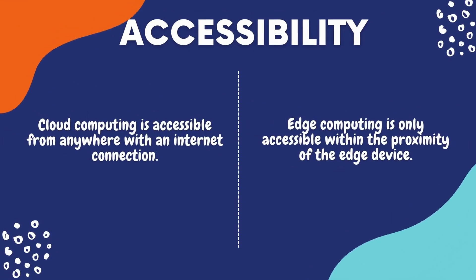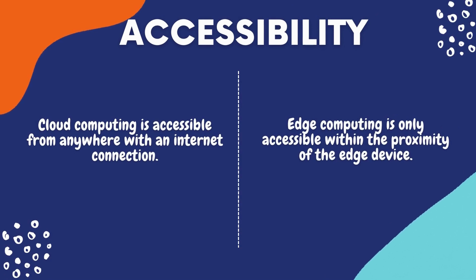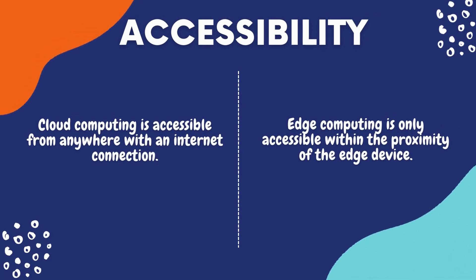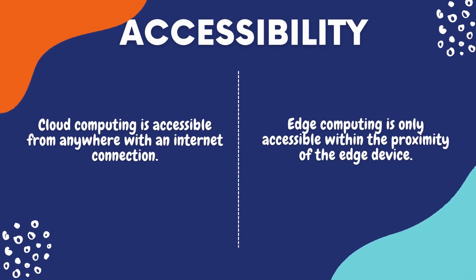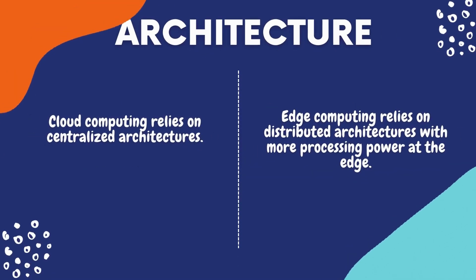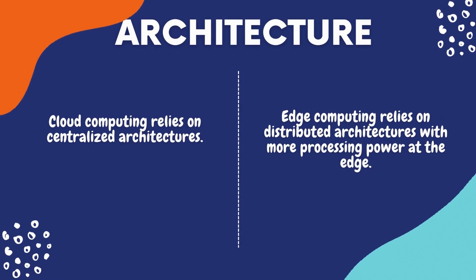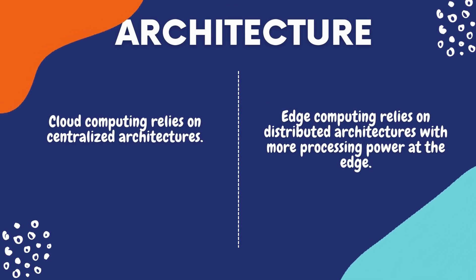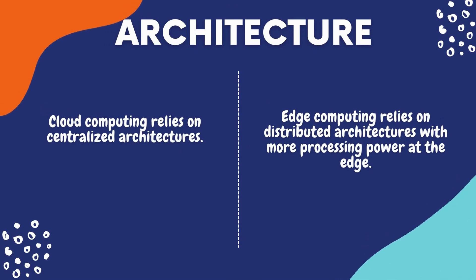Accessibility: cloud computing is accessible from anywhere with an internet connection; edge computing is accessible within the proximity of edge devices. Architecture: cloud computing relies on a centralized architecture; edge computing relies on a distributed architecture with more processing power at the edge.